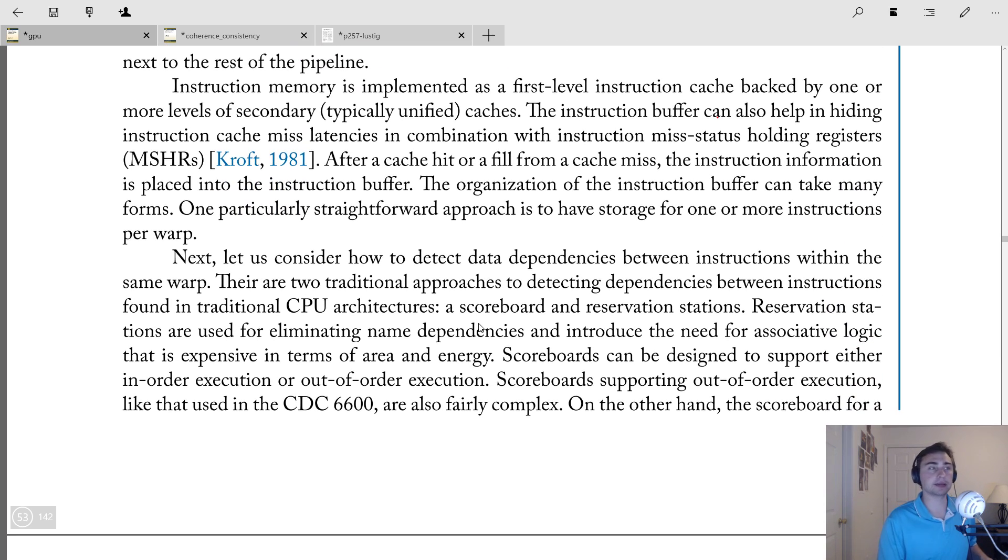So kind of going backwards a little bit, giving a little bit of background. So instruction memory is implemented as a first level instruction cache backed by more levels of secondary unified caches. So the instruction buffer can help in hiding instruction cache miss latencies. So you can think of the instruction buffer as basically another layer in this hierarchy. So you'll check to see if you've got instructions in the instruction buffer that you can issue. You're also checking in the cache when you have to access a new instruction. And then likewise, you go down further in the hierarchy, if an instruction is not in the cache. So after a cache hit or a fill from a cache miss, so when we're getting a new instruction, the instruction information is placed into the instruction buffer. And the organization of the instruction buffer can take many forms. But the most straightforward approach is just to have storage for one or more instructions per warp.